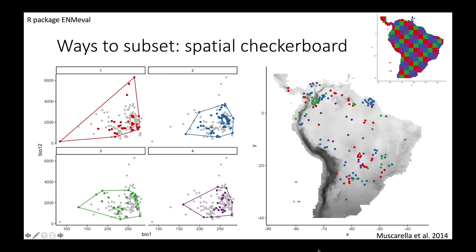A way to better get even sampling of the environment is to use a spatial checkerboard. On the top right, you see how space is being subset. There are four different checkerboard colors and points are put into whatever bin they fall in. For a spatial checkerboard, you get better even sampling of the environment across all of your subsets. And because it's not random, you don't have to do it a hundred times. You can just do it once.